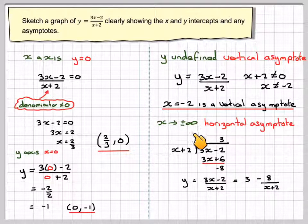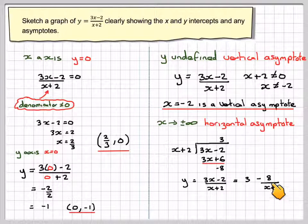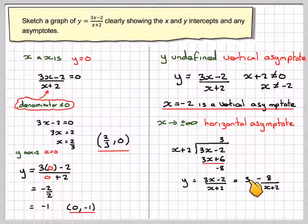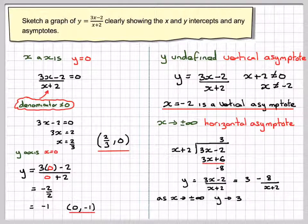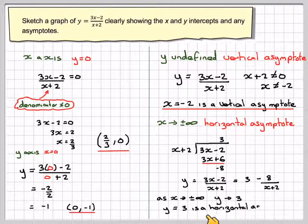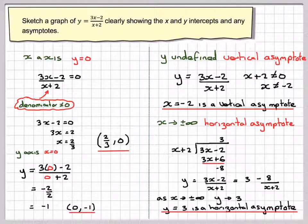As x goes very large or small, this becomes 8 divided by a very large number, which is 0. Therefore y equals 3 is the asymptote. Y will tend towards 3, so y equals 3 is a horizontal asymptote.